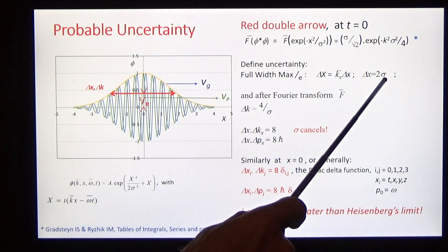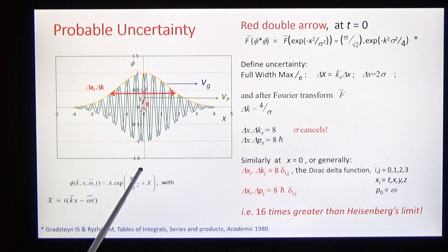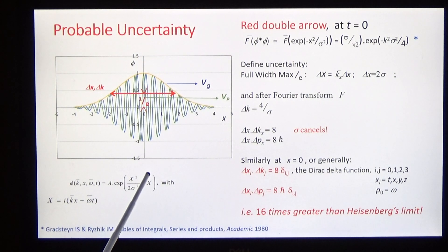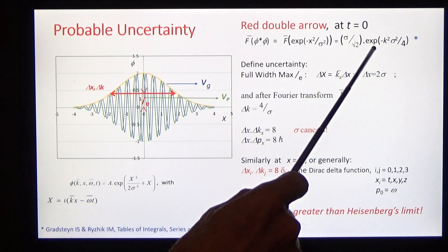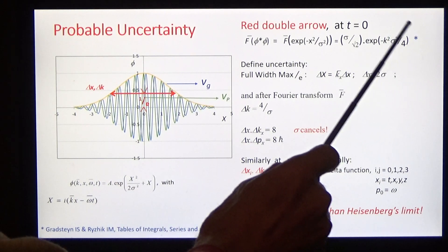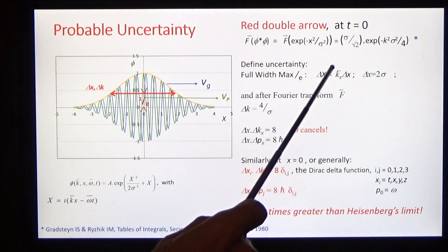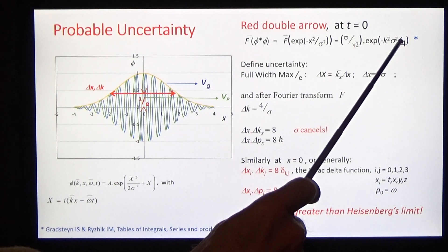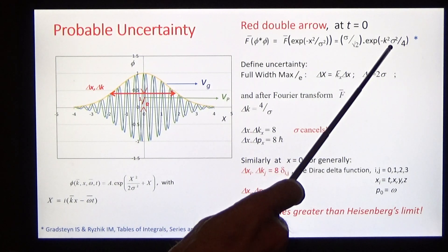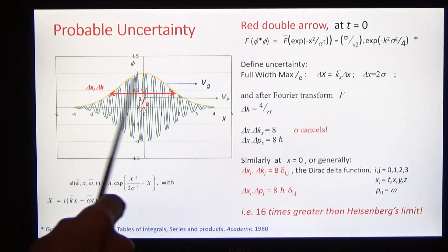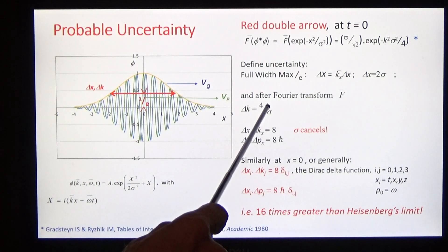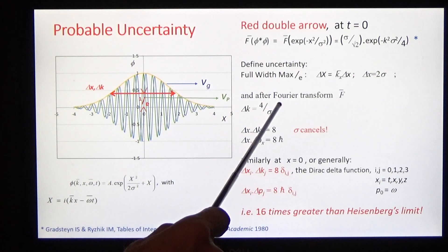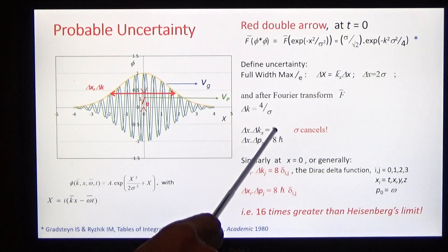And what is the uncertainty in momentum? We take this Gaussian and transform it by Fourier analysis to another Gaussian. It's the full width half maximum of that Gaussian, which is equal to four over sigma. So dx·dkx is equal to 8.